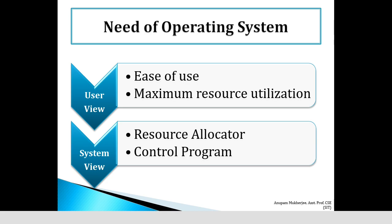There are actually two viewpoints. The first is the user view. The operating system is designed mostly for ease of use with some attention paid to its performance. In mainframe or mini computers, the operating system is designed to maximize resource utilization to assure that all available CPU time, memory, or IO are used efficiently. In a network system, resources are stored in servers like file servers or printer servers. These resources are shared through the network, so in that case the OS is responsible for sharing of information, security, and usability.